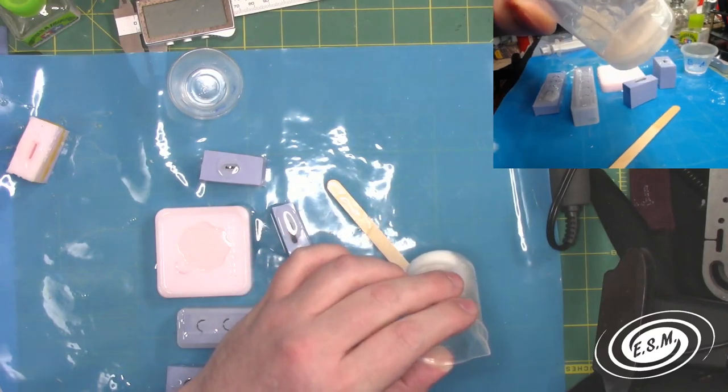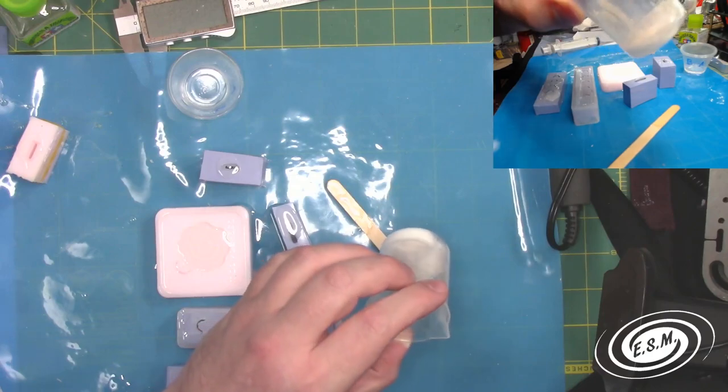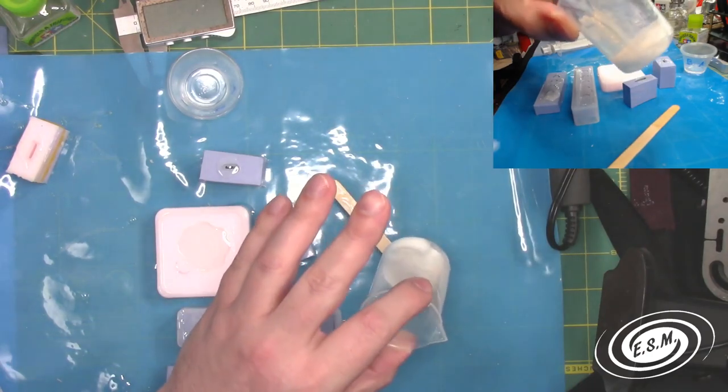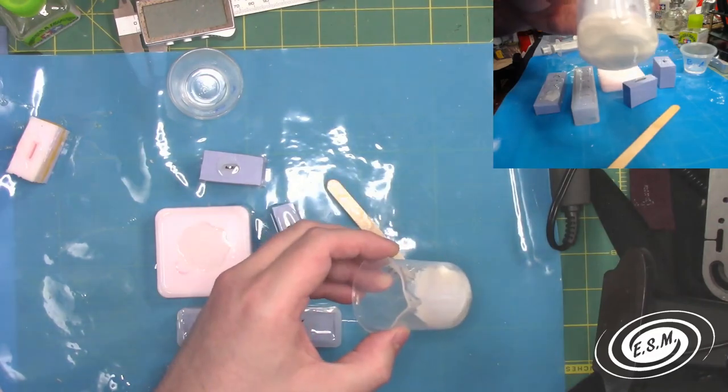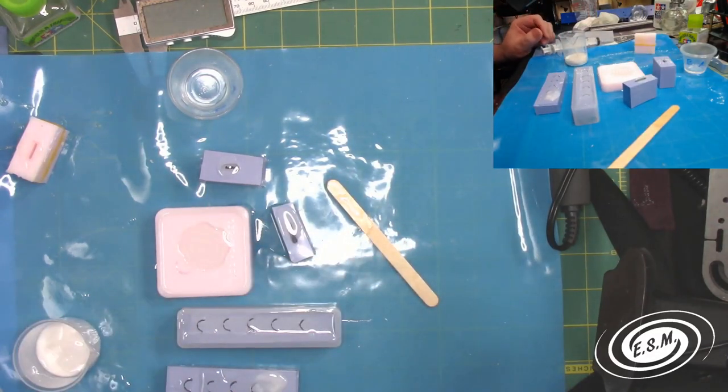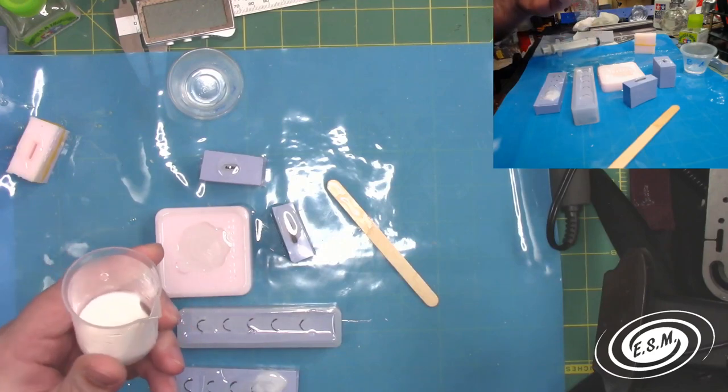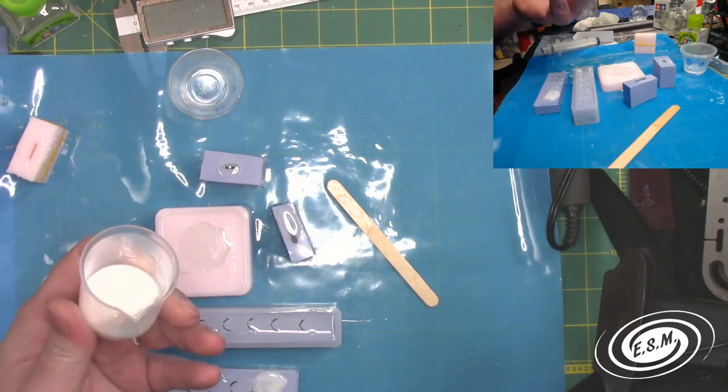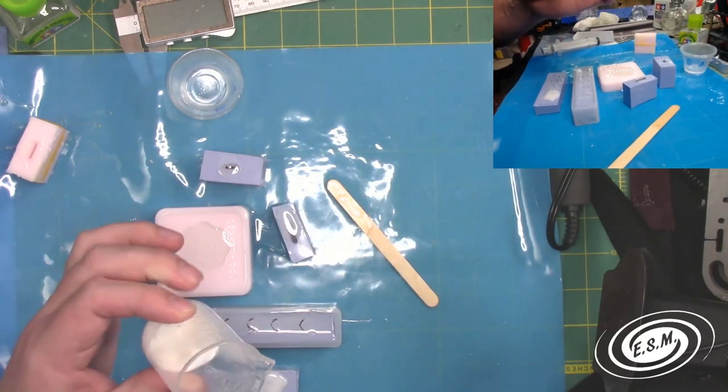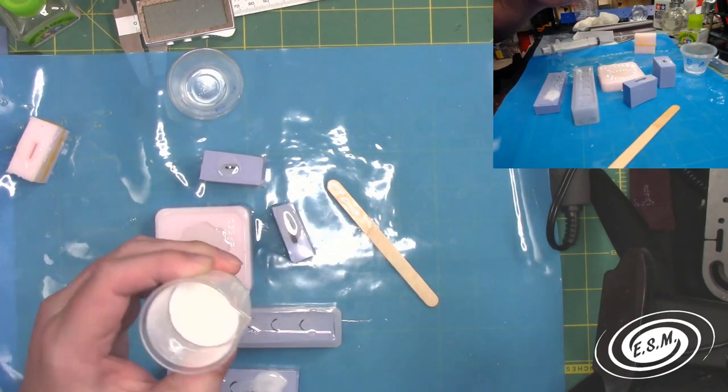It's already starting to cure. It was a pretty quick process. This has heat, it cures faster with heat. So it cures from the thickest spot first is what I'm trying to say. It has an exothermic reaction. So the thin parts will be cured last and the thickest parts will cure first. That's why what was left in this container is also very warm. It has turned white because it has started to cure.